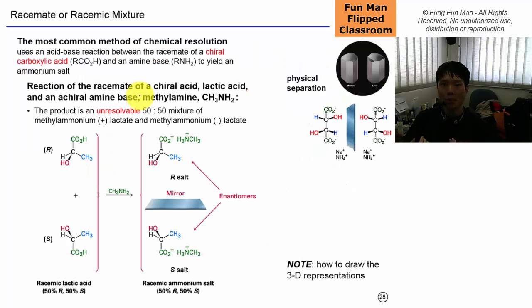Now normally in the lab, when we want to separate the two enantiomers, we use something called chemical resolution. Basically the most common form is to use an acid-base reaction between the racemic of a chiral carboxylic acid and an amine base to use an ammonium salt. Now if we look at this example here, these two molecules are enantiomers and we throw in an amine that's not chiral, we cannot resolve the product because the salt they form are also enantiomers. They have the same physical property, so there's no way to separate them.